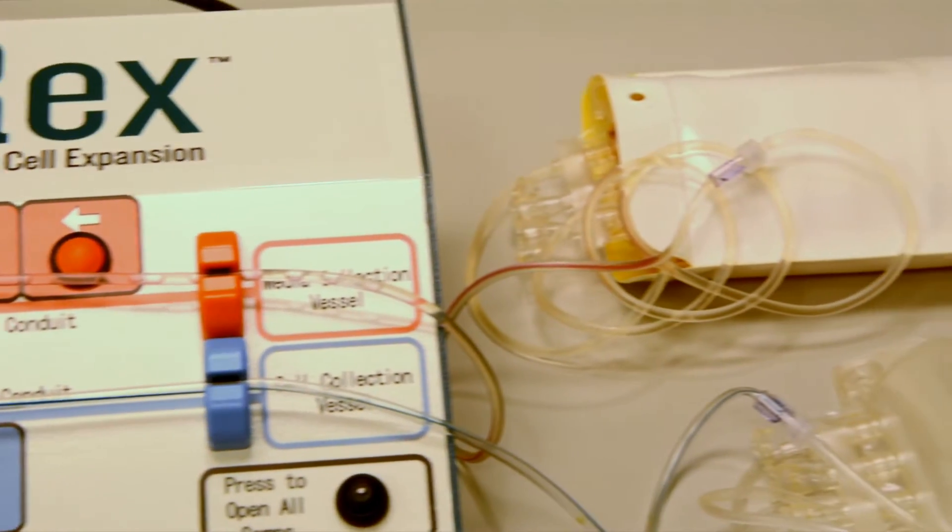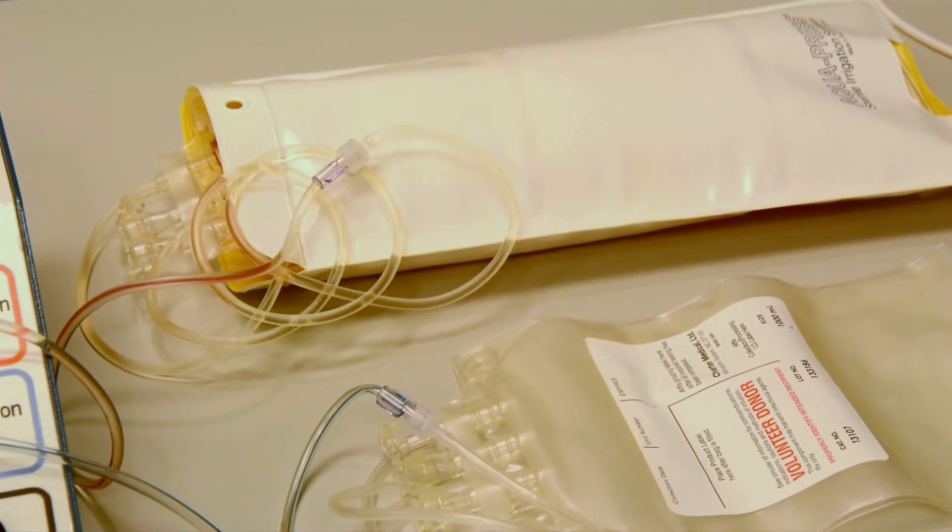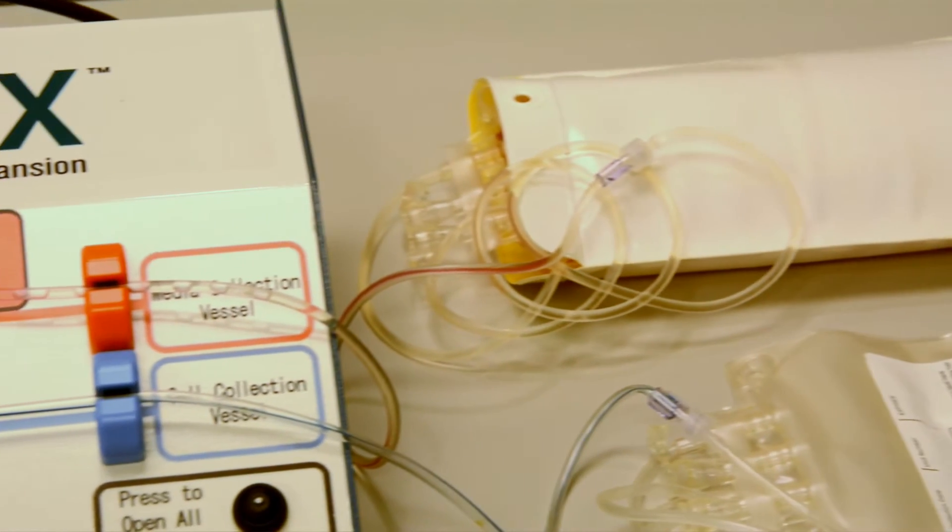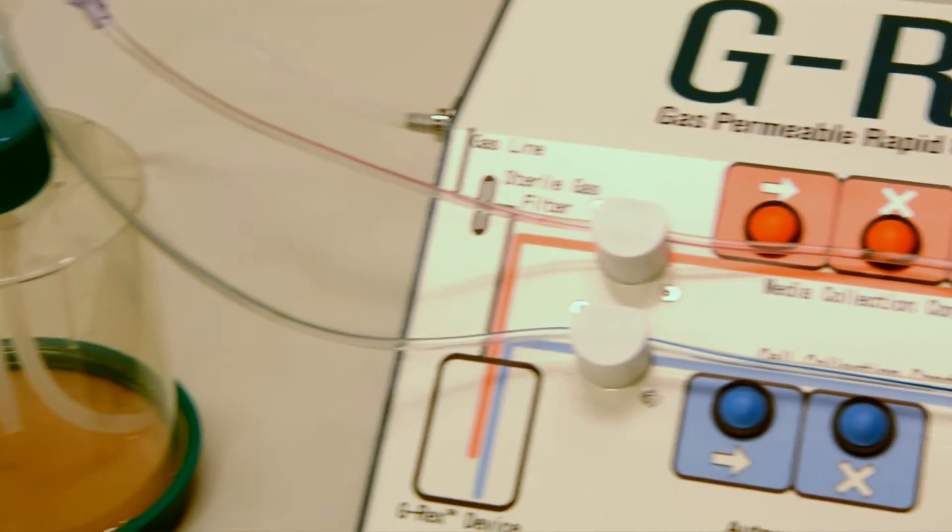This is the collection bag at the end of the process, leaving in the G-REX a residual volume of only 10%, in this case 100 milliliters, which we can then use to resuspend the cells.